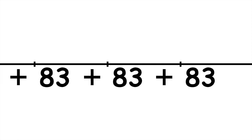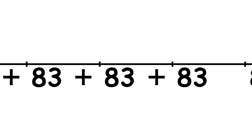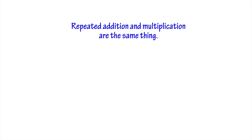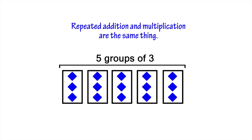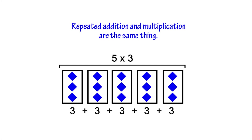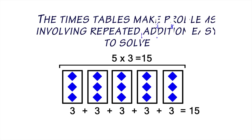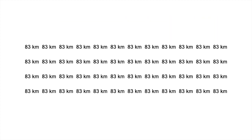But that's going to take a long time, and there's a much quicker way of solving the problem. A problem involving repeated addition can be rewritten as a problem involving multiplication. If I have five groups of three, I can either add them up using repeated addition — three plus three plus three plus three plus three — or, if I know my times tables, I can multiply five times three, which equals 15. That's what times tables are for: to make problems involving repeated addition quicker to solve.